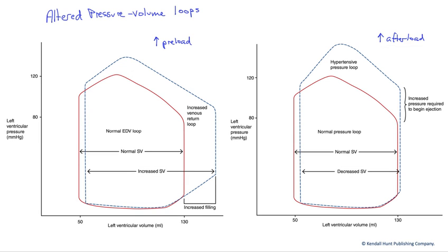In this pair of graphs, we're going to look at altered pressure-volume loops. Specifically, what we're going to do is look at cardiovascular changes that affect ventricular performance.